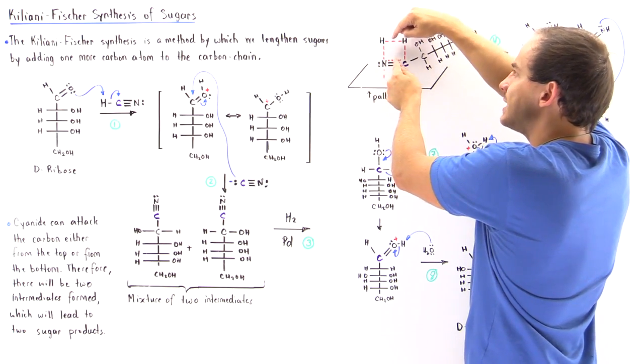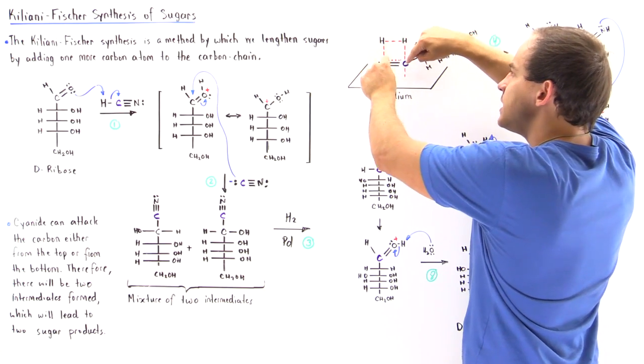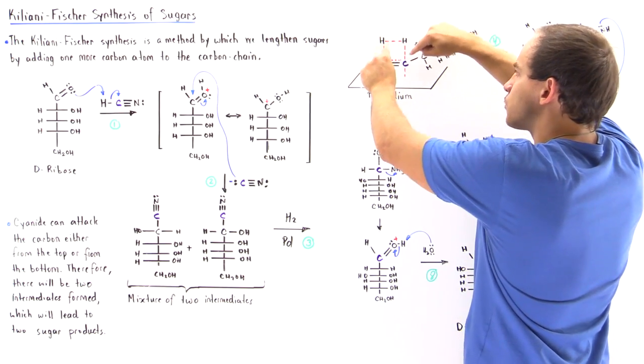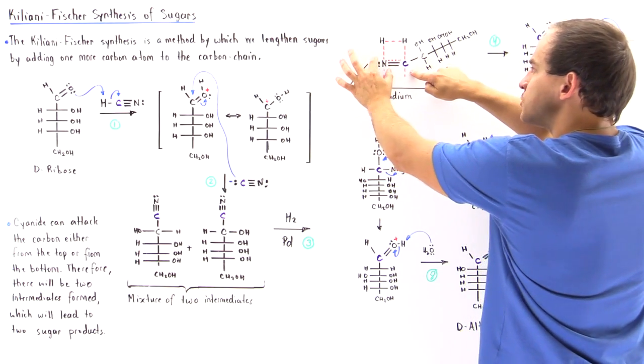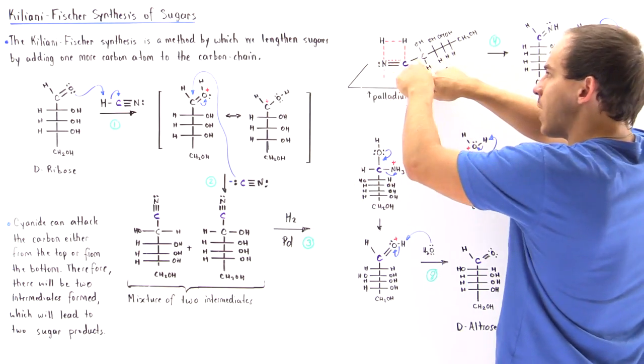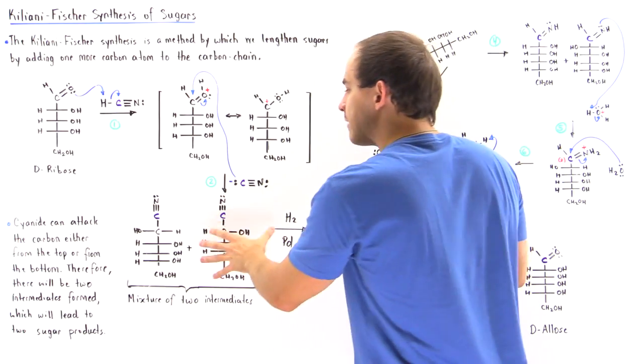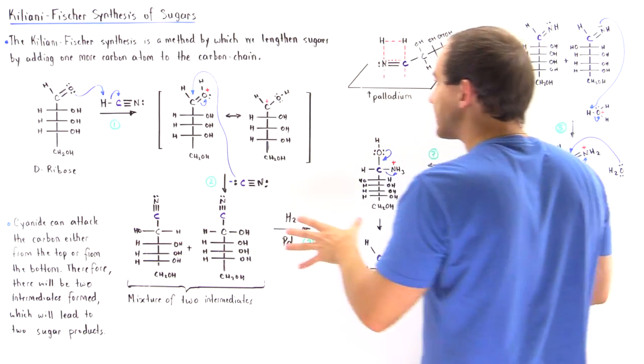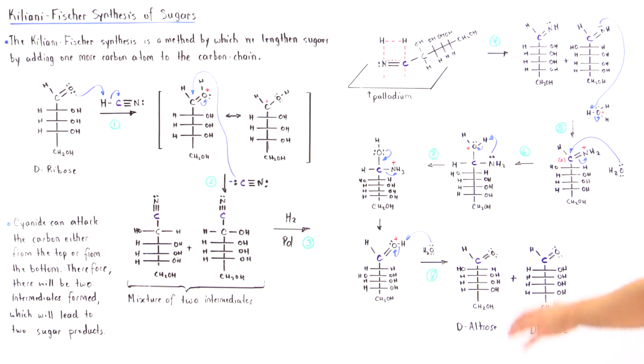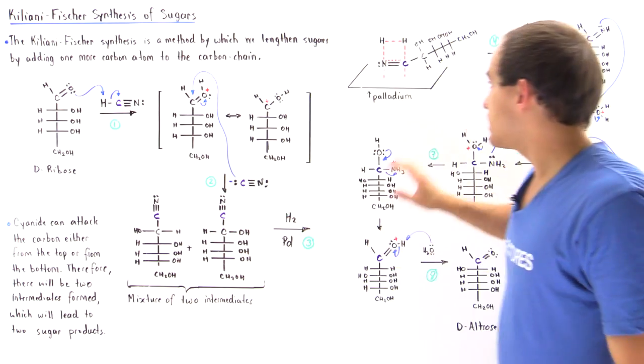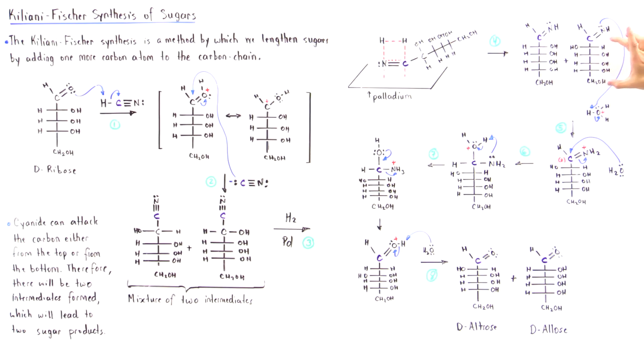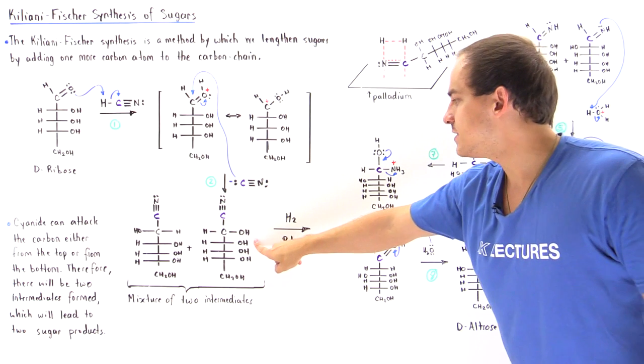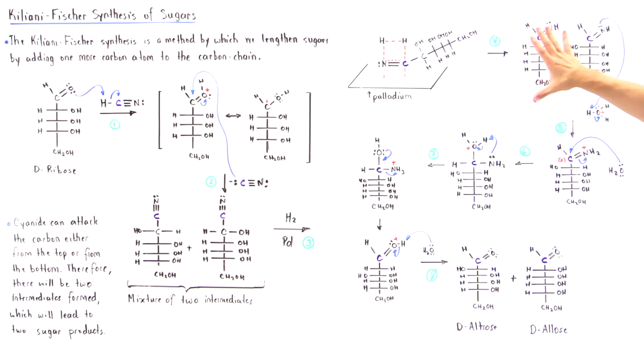At the same time that the pi and sigma bonds weaken, these two sigma bonds begin to break. We can add two H atoms, one onto our nitrogen and one onto our carbon. Because we have these two intermediates that can react with the palladium in the following fashion, we produce these two intermediates. If this reacts with the palladium and the diatomic H2, we form this molecule. If this reacts, we form this molecule here.